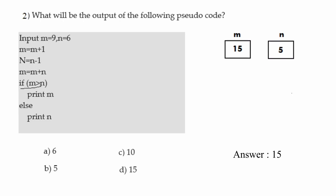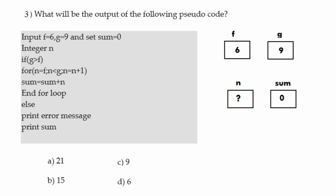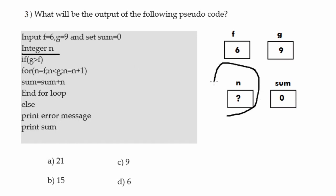Because of print m, the value 15 is displayed on the screen. The output of this pseudocode is 15. Moving to the third question: the inputs are f equals 6 and g equals 9. There is a variable sum with initial value 0, and a variable n which is an integer with an unknown value. There is a condition: if g greater than f.